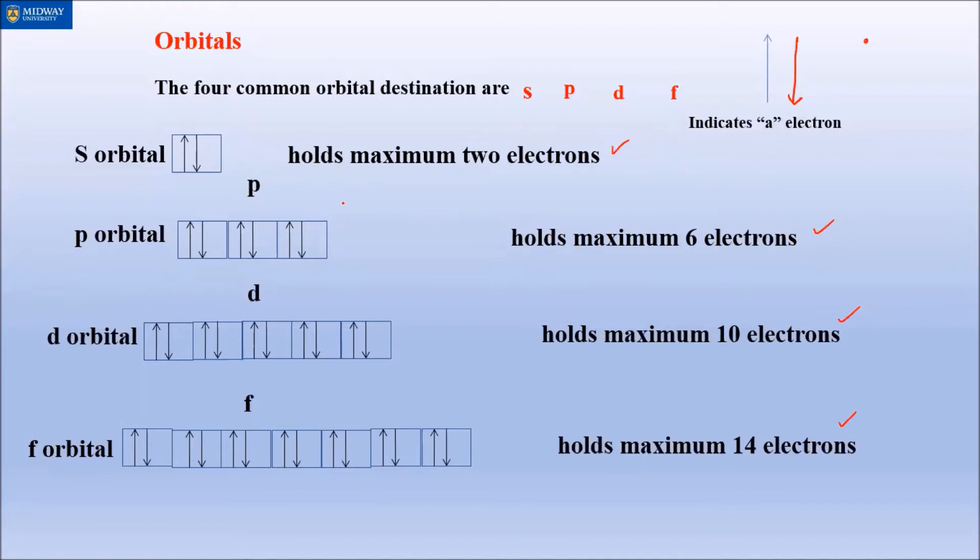When you write a free flow electronic configuration, you wouldn't need to worry about this box format. But when you specifically write box format, you have to remember that S is one box. Every P, whether it's 2P or 3P or 4P, you have to write three consecutive boxes underneath it. Each box can hold a maximum of six electrons - these three cells, two per cell.